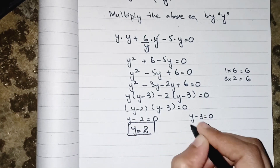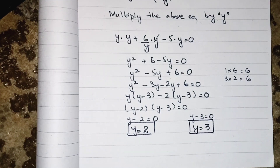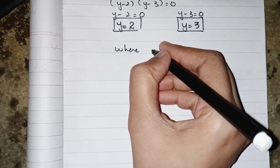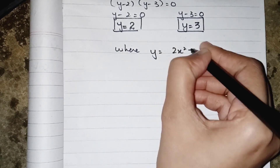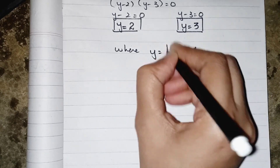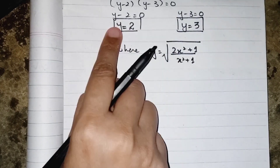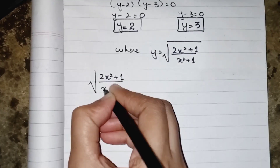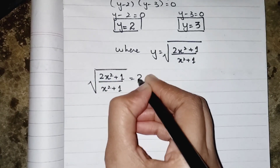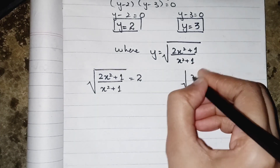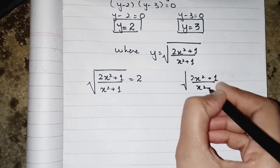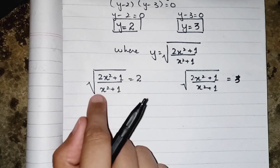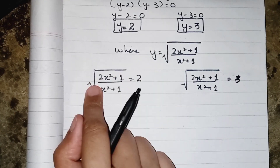We get two values of y: y = 2 and y = 3. However, y is an imaginary substitution — we placed it in for the square root of (2x²+1)/(x²+1). So we must substitute these values back in place of y. Setting the square root of (2x²+1)/(x²+1) equal to 2 (and separately equal to 3), we need to remove the square roots to find x.